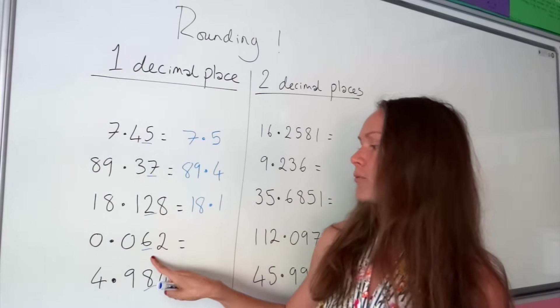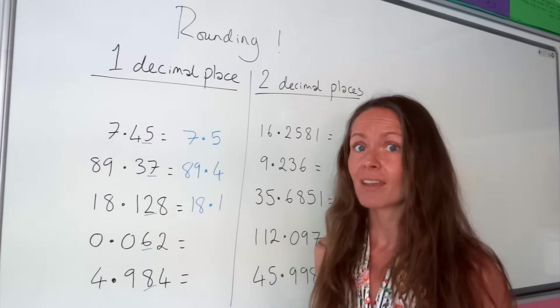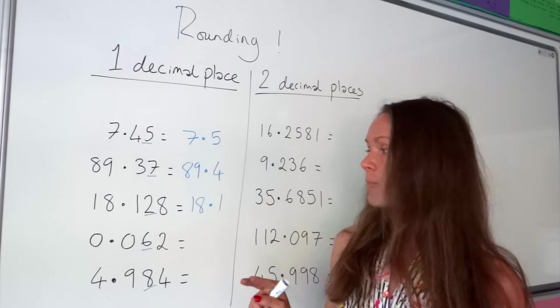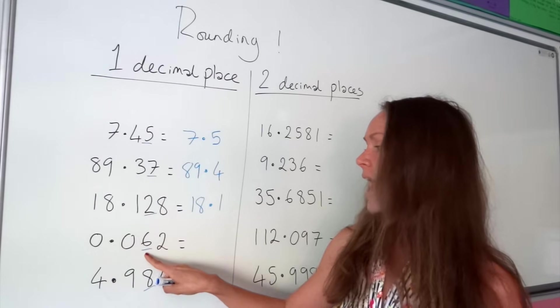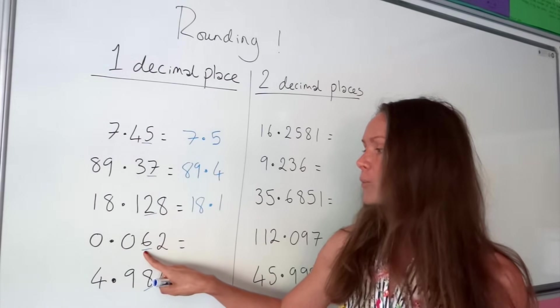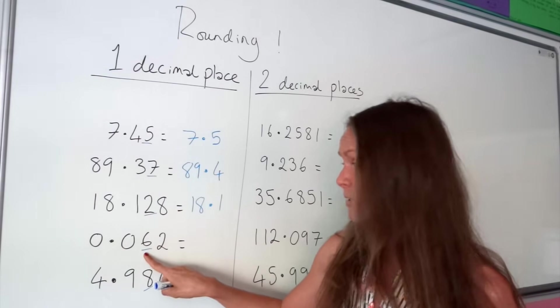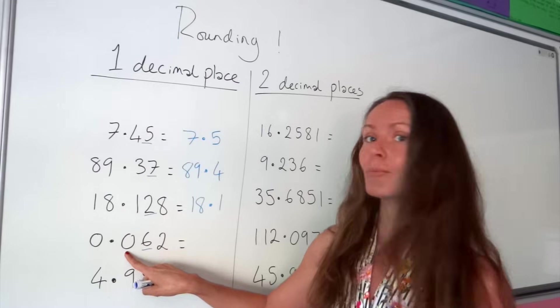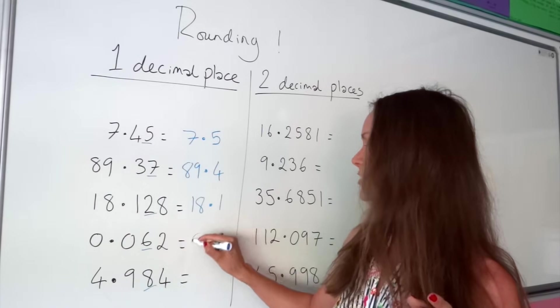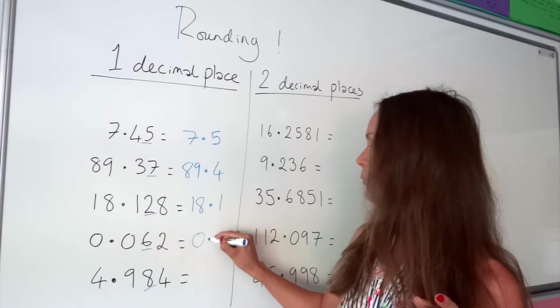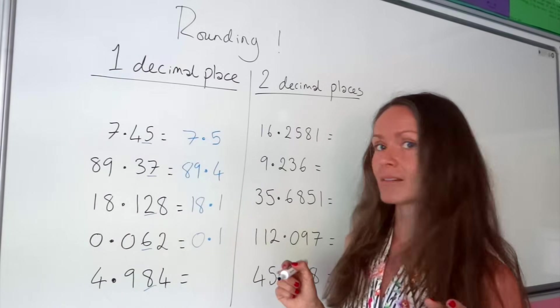On to this one down here. Remember, we're checking the second number after the decimal place, and it's bigger than five, which means we round this number up one. So it changes to 0.1.